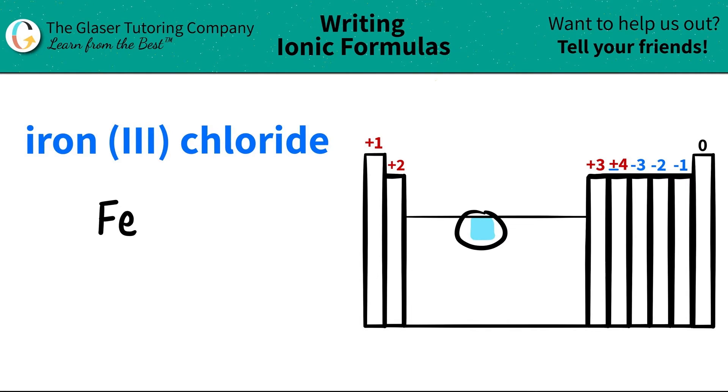But since iron is a transition metal, it's in this box, it has many different charges. We need the charge in order to find out this formula. That's what this Roman numeral is about. The Roman numeral is always the charge of the metal. In this case, this is a 3. So I know that iron is going to exist as a plus 3.